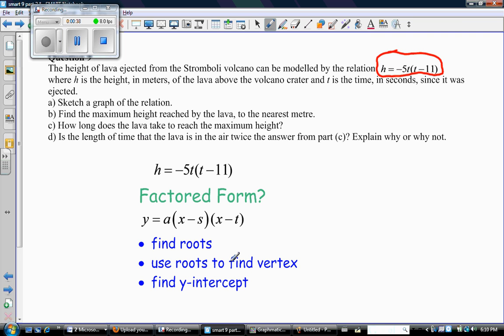The first thing we did was we looked carefully at the equation given and realized that we were given a factored form equation. And when we're given factored form equation, here's the process for drawing a good sketch. First, you find the roots. You use the roots to find the vertex. If you need to, you find the y-intercept. And from there, you can usually make a pretty decent sketch.